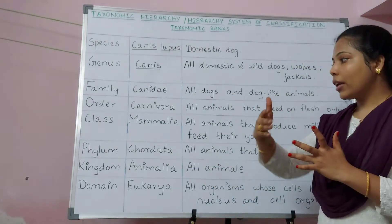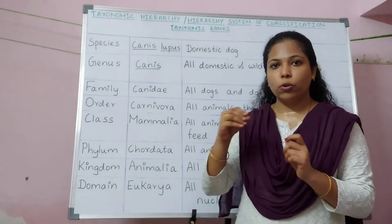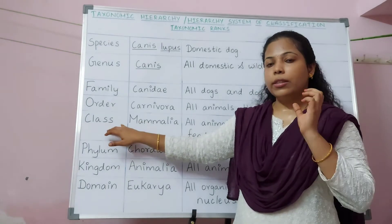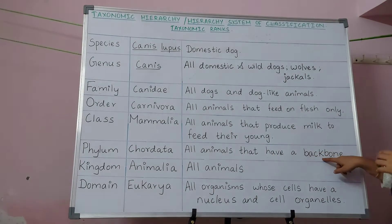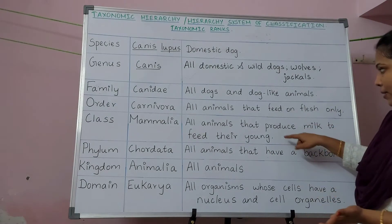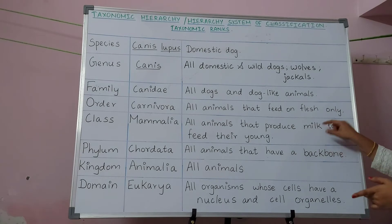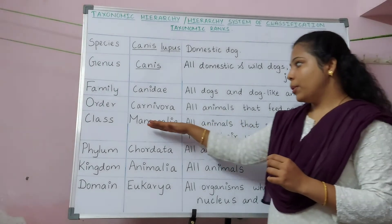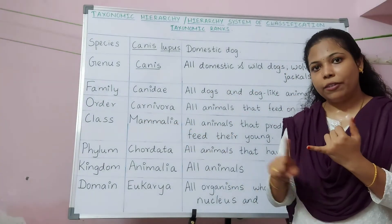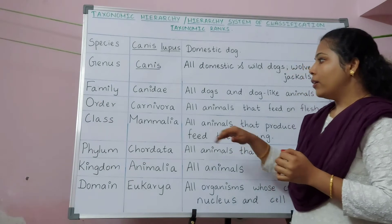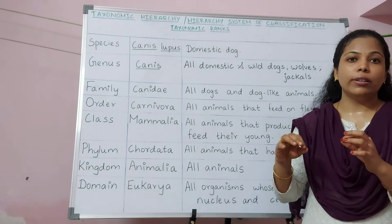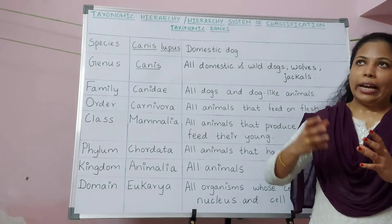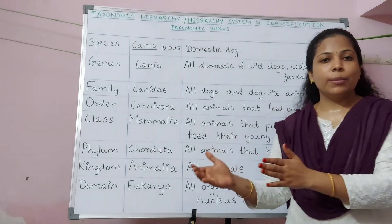Since animals within Phylum Chordata are not all similar, we categorize it into classes. Class Mammalia includes all animals that have a backbone and the capacity to produce milk using mammary glands. This milk is used to feed their young ones.